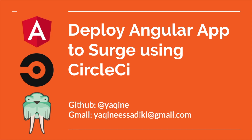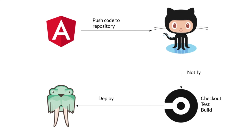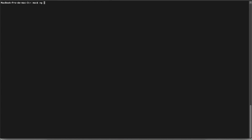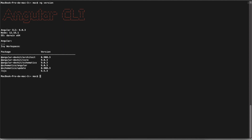First I'm going to create an Angular application then push it to a GitHub repository. Next CircleCI will be notified and start the build process — starting from code checkout, running tests, building up, and finally if everything succeeds it will deploy the app to Surge. I'm sure this video will help you in your projects, so keep watching and let's start the tutorial.